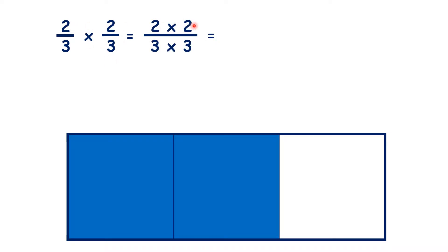We just multiply the numerators and multiply the denominators, so our answer is four-ninths, because two times two is four, and three times three is nine.